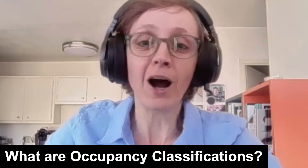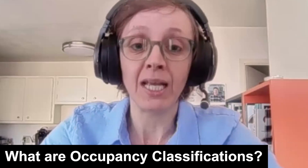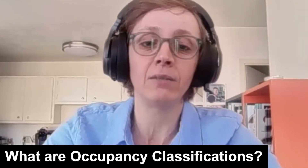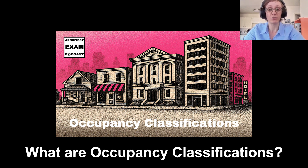All right, let's get started. So what are occupancy classifications? At its core, an occupancy classification is simply how buildings are categorized based on their primary use. The building code uses these classifications to apply the right safety requirements to different types of spaces. It's really about tailoring safety to specific uses and risks. Think about your own home — we don't cook in bathrooms or sleep in garages. Different rooms serve different purposes and have different safety requirements. The building code works in the same way, just on a larger scale. Occupancy classification is the foundation for virtually all other code requirements.